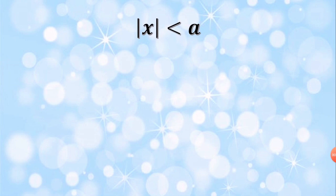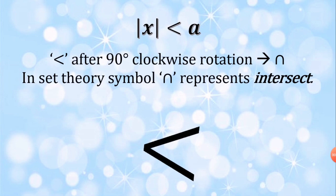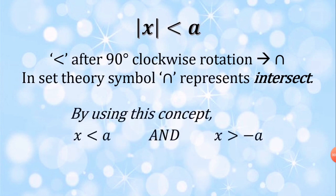We designed this method to help students to solve absolute value inequalities in an easier way when there's a modulus either at the right side or the left side of the inequality. If the modulus of x is lesser than a, the lesser symbol should be turned 90 degrees clockwise. This gives us a symbol which looks alike the letter n. In set theory, this symbol represents intersect. As you guys know, if the symbol intersect comes in, then we need to use the term which is called AND.